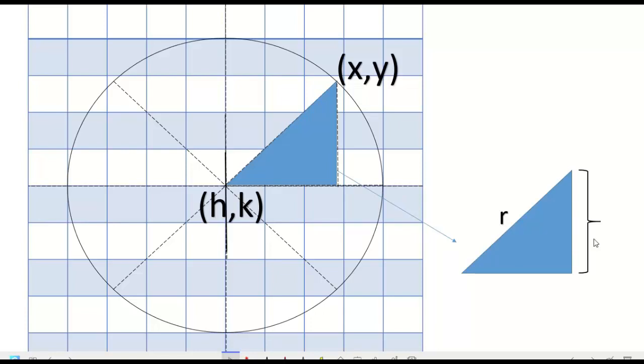How long are the legs? The vertical distance is the difference of y and k. That is the first leg: y minus k. The horizontal distance is the difference of x and h. That is x minus h, the other leg.